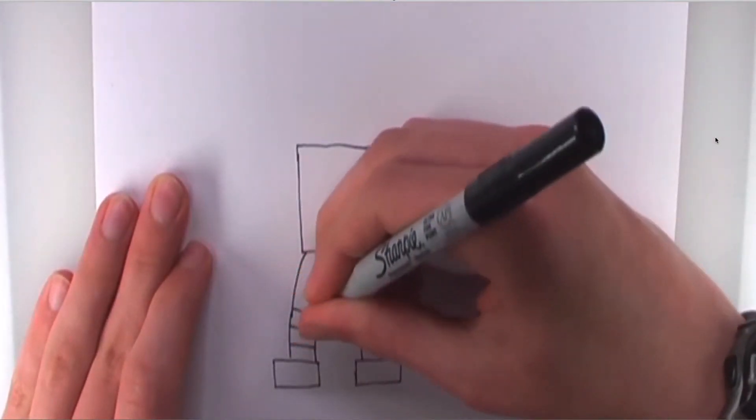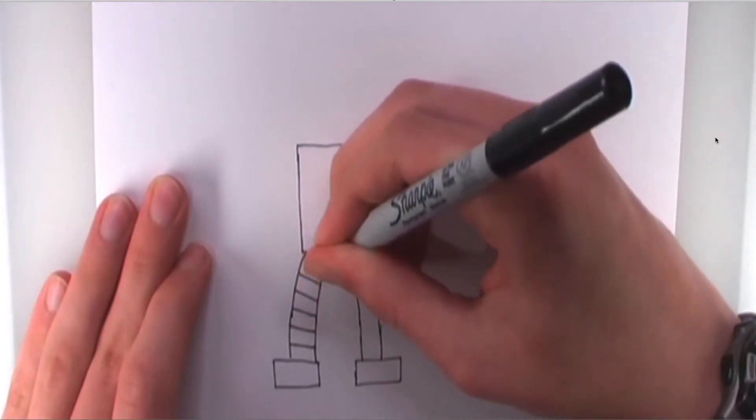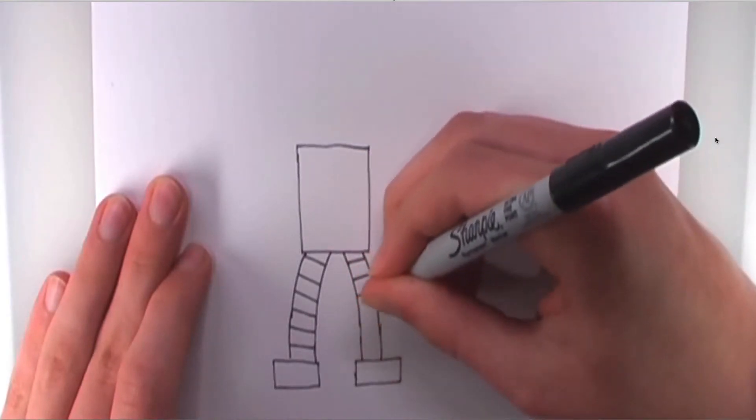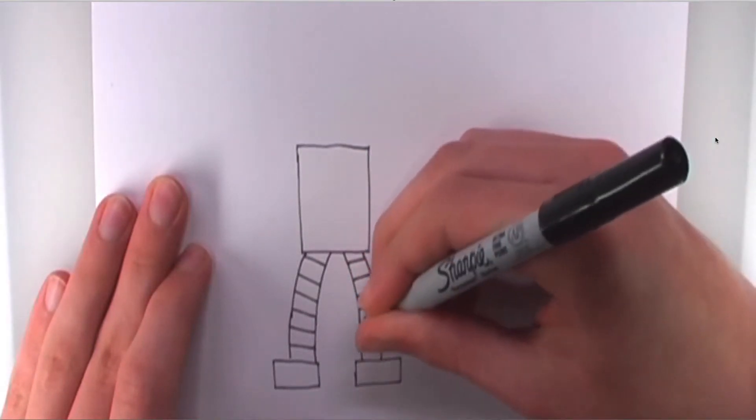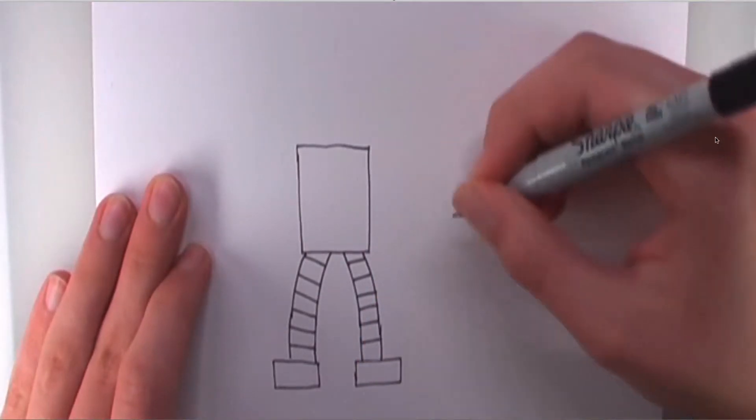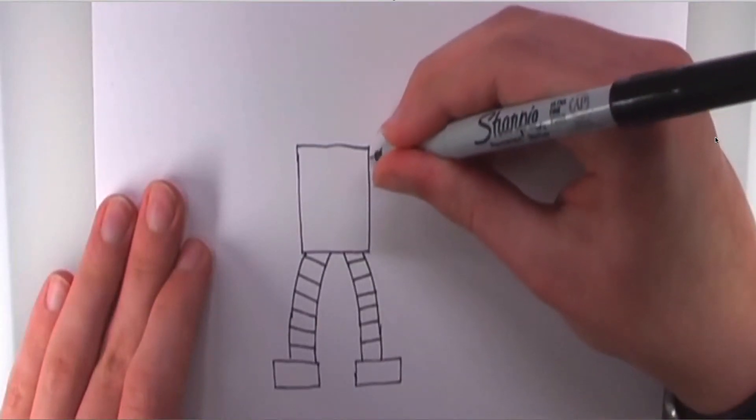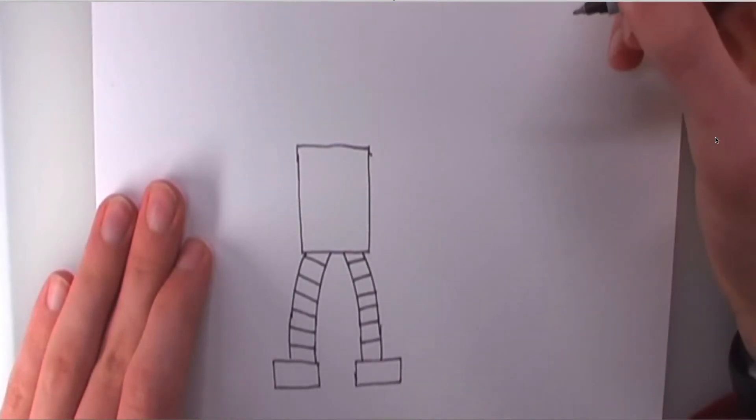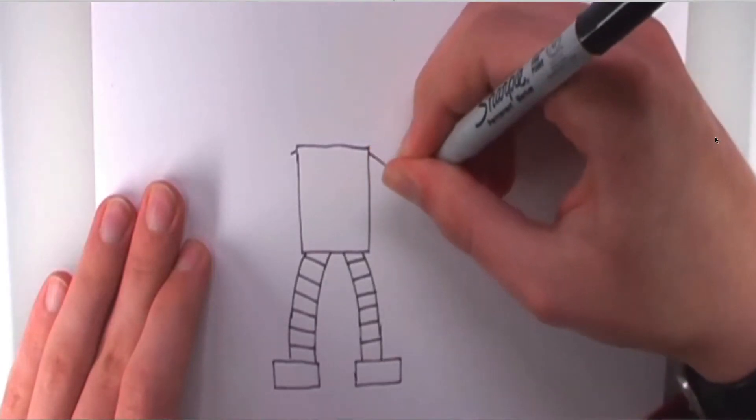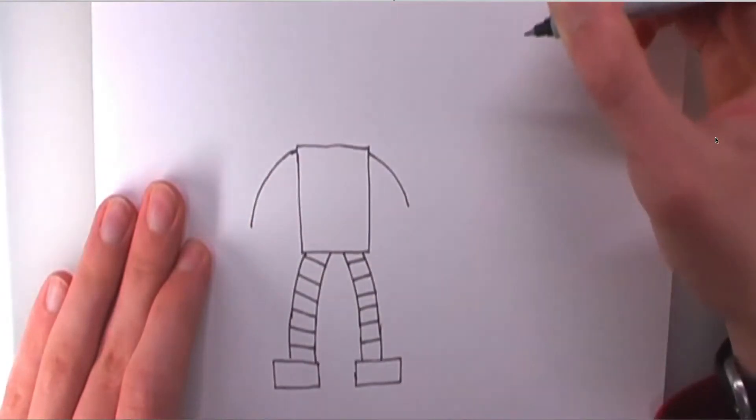Now, on the legs, we're going to put horizontal lines. Because we're going to give some sections to them. We can just add as many as you want, but don't make them too close together. Now, what we did with the legs, we're going to do something similar. But, they're going to start here and here. So, a line curving down on either side.